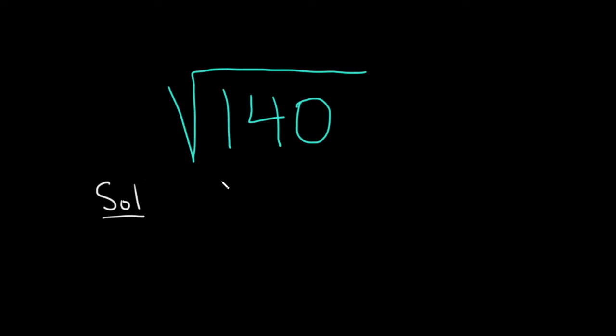In other words, what is the largest factor that, when we take the square root of that factor, we get a whole number. So we can think of 140 as 35 times 4.